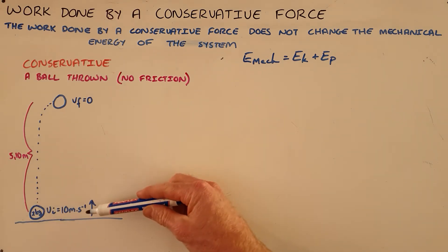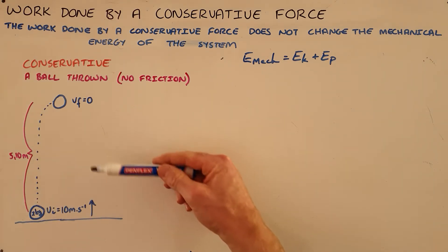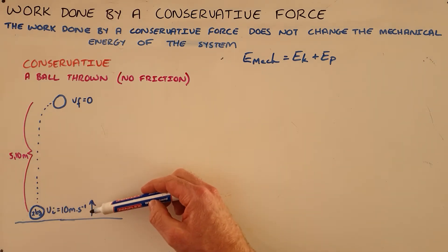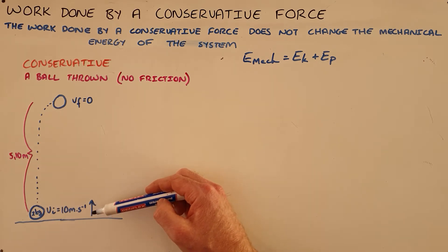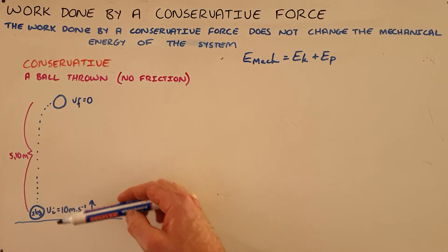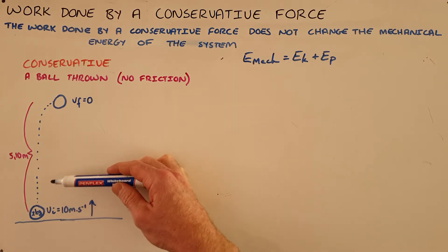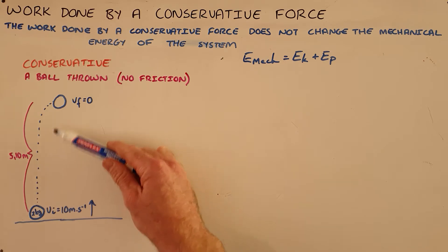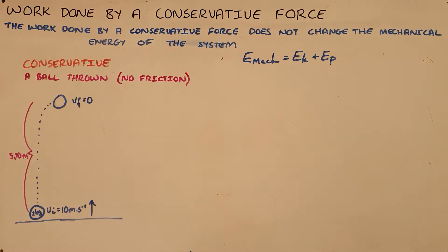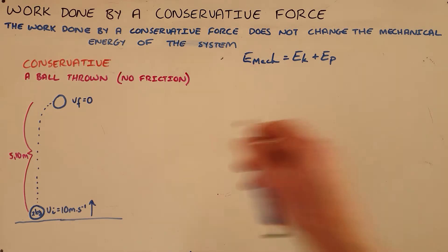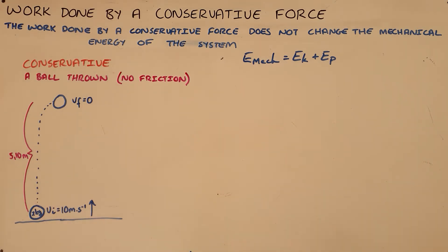We can demonstrate this with a simple example of a ball that is thrown vertically upwards with an initial velocity of 10 meters per second. It is a 2 kilogram ball, and we can use the equations of motion to determine that it will reach a maximum height of 5.10 meters. This is in the absence of air friction.